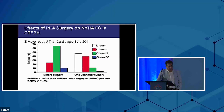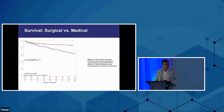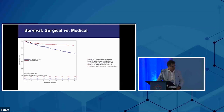Looking at functional class outcomes: class 3 is dyspneic on minimal exertion, class 4 is dyspneic at rest. Many patients are in class 3 and 4 pre-operatively, and almost everybody gets to class 1 or 2 post-operatively. British data also show that patients operated for CTEPH have a very favorable mortality curve compared to those with the same diagnosis who cannot be operated, who have a much worse prognosis.